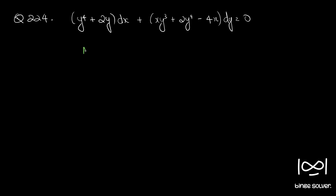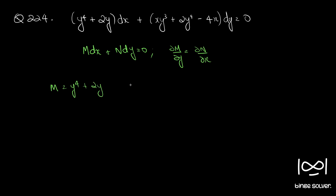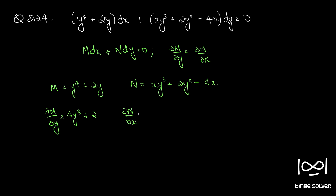The given differential equation is in the form M dx plus N dy equal to 0. We first check whether it is exact using the necessary and sufficient condition: dou M by dou y equal to dou N by dou x. So M is y raised to 4 plus 2y, and N is xy cubed plus 2y raised to 4 minus 4x. So dou M by dou y is 4y cubed plus 2, and dou N by dou x is y cubed minus 4.